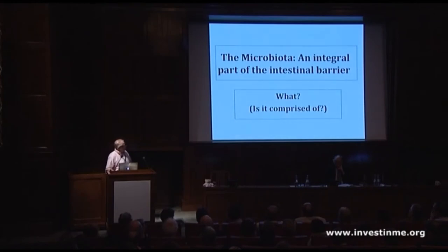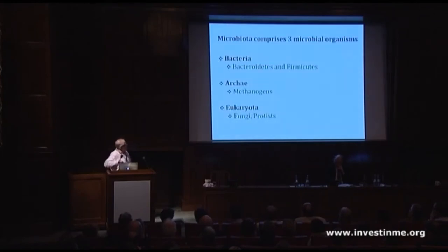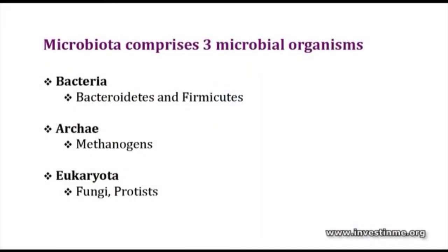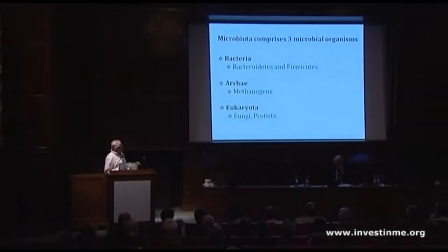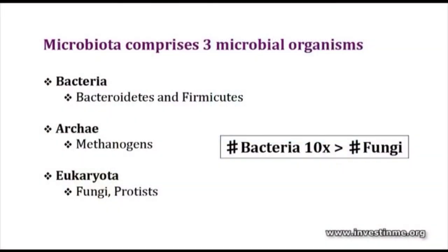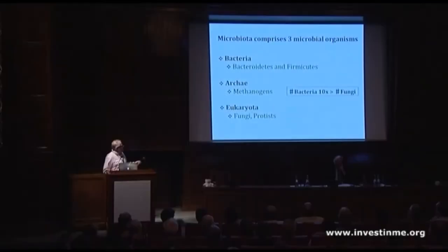There are three types of microbial organisms that make up the microbiota. There's bacteria, dominated by two phyla — the bacteroidetes and the firmicutes — but there are other organisms as well: archaea and eukaryotes, primarily fungi. The bacteria make up about ten times the number of fungi, so bacteria vastly outnumber these other organisms.